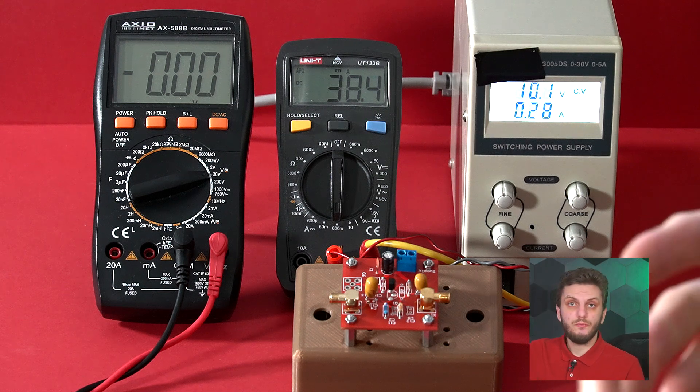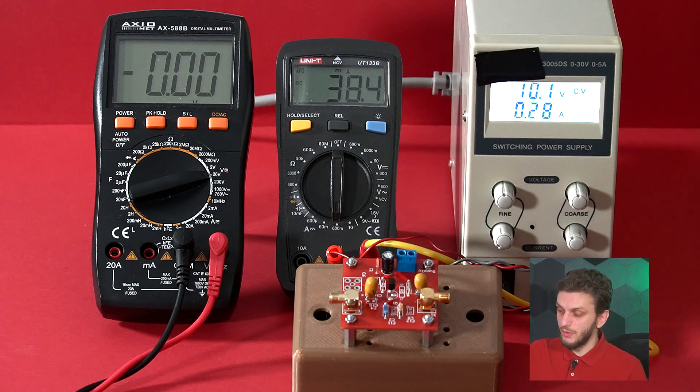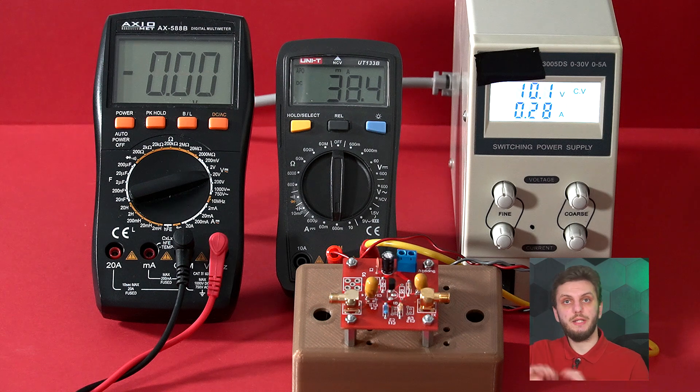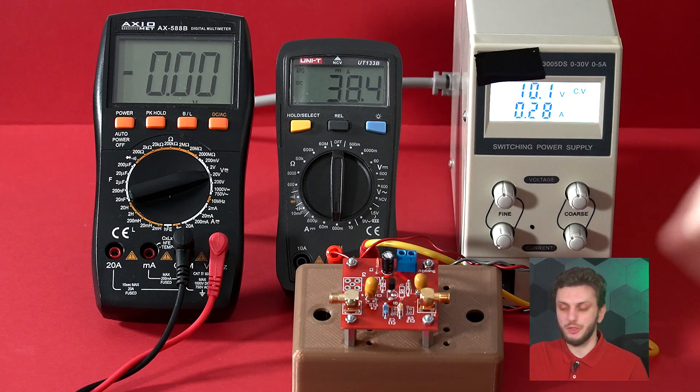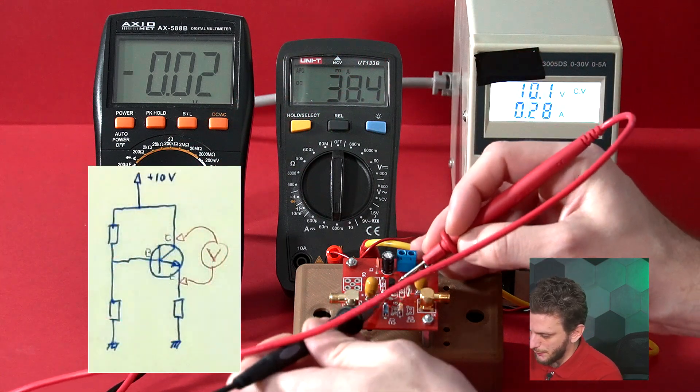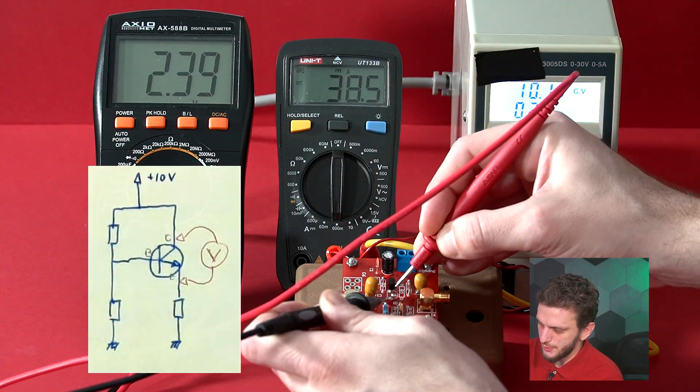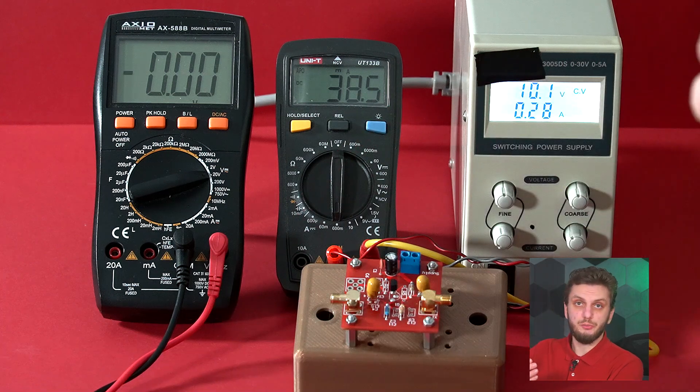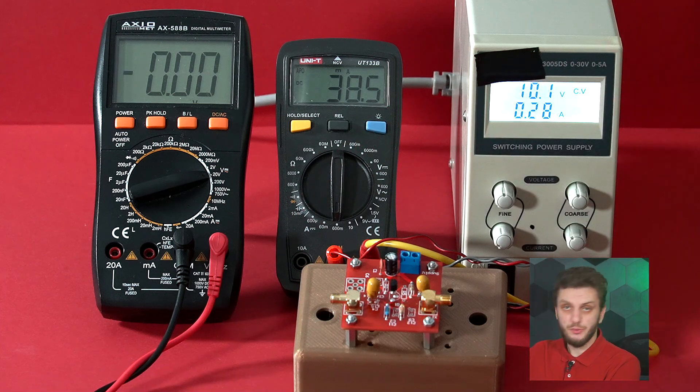Now we can determine how much of this is going through the collector circuit and how much through the base resistor network. First of all, we can measure the collector emitter voltage, which is about 2.4 volts. Our desired operating point was at 2.5 volts, but we're quite close.